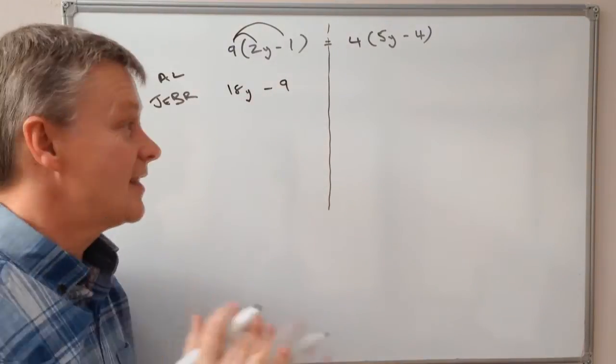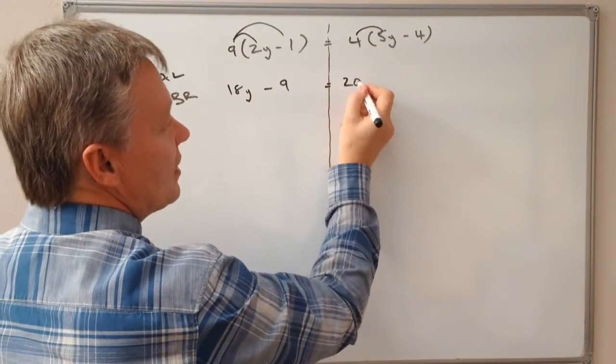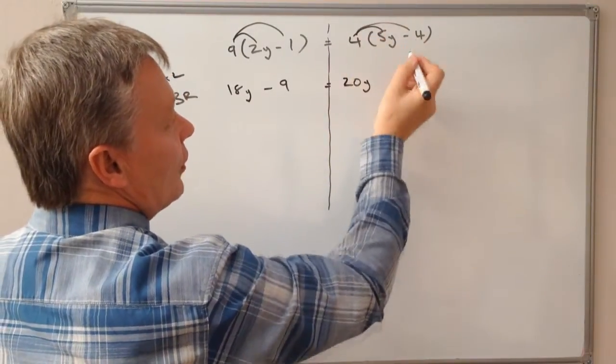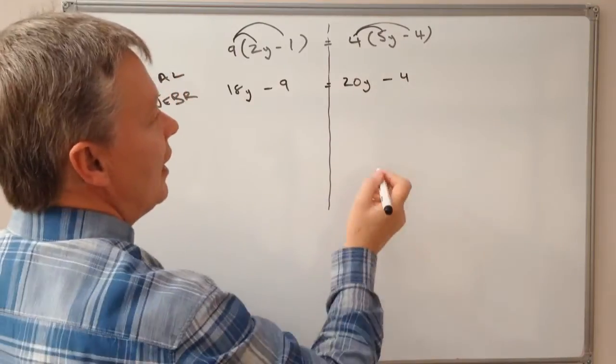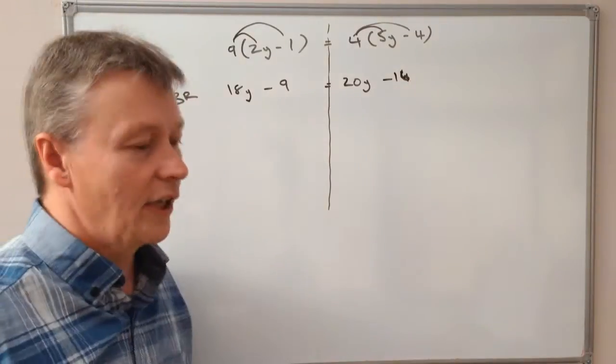On the other side, I've got exactly the same. 4 times 5y is 20y, and 4 times minus 4 is minus 16.